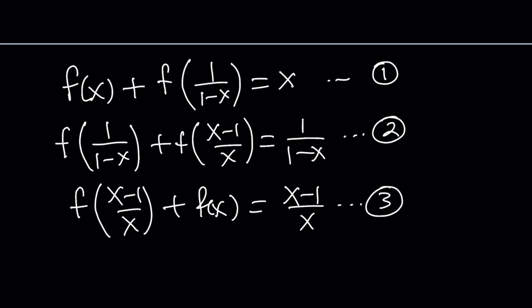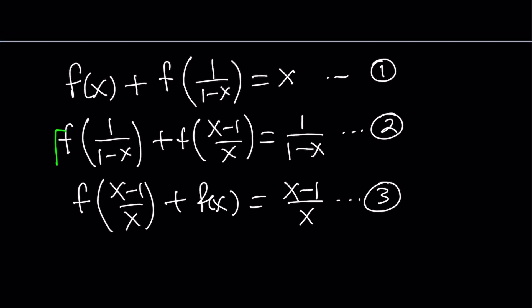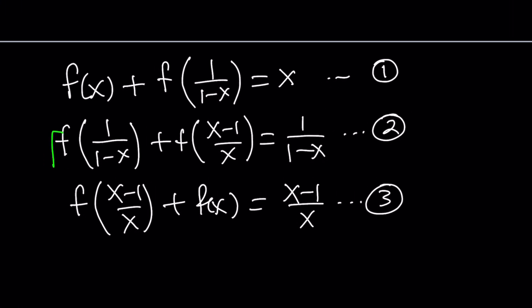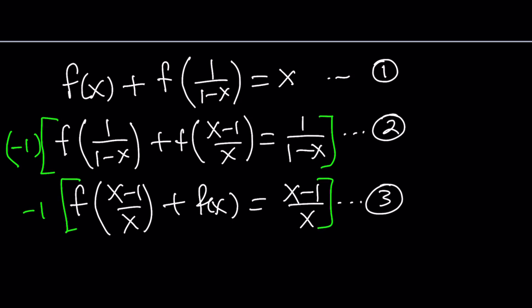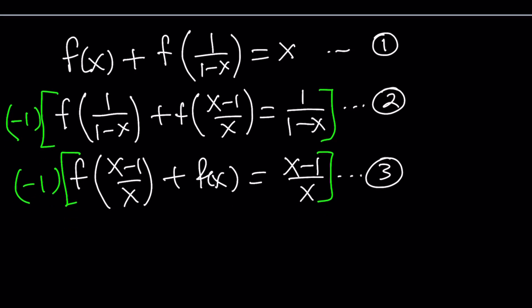There are a couple of different things you can do. One is you can add all the equations and get every term twice, divide by 2, get the three-way sum, then subtract what's needed to get f of x. Another way is to get rid of the second and third equation by negating. Let's go ahead and do that first — multiply the second equation by negative 1 and the third equation by negative 1, while the first equation stays the same.